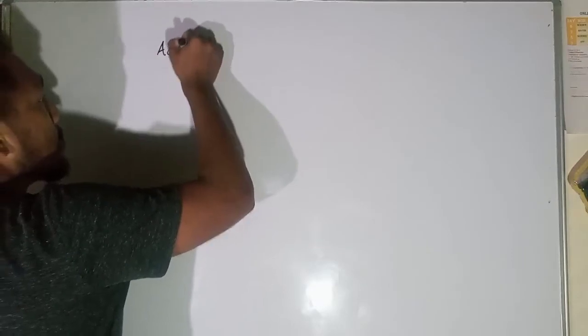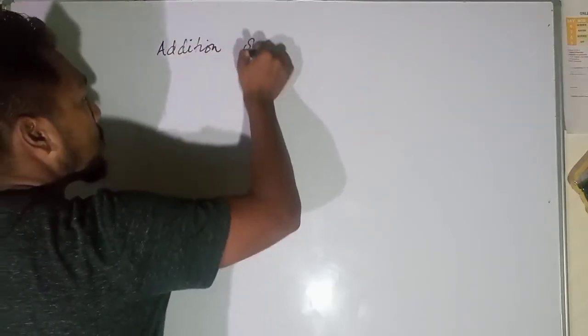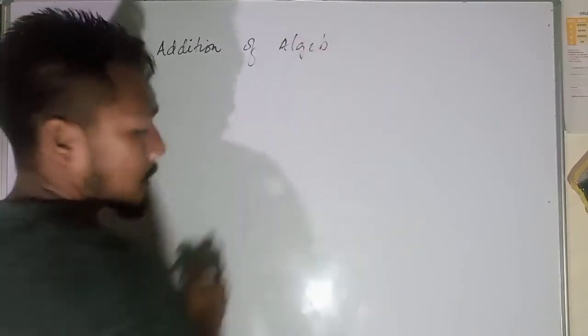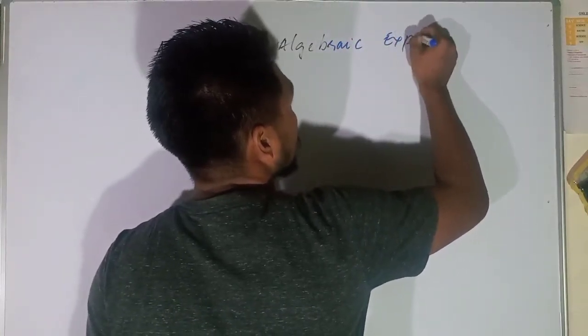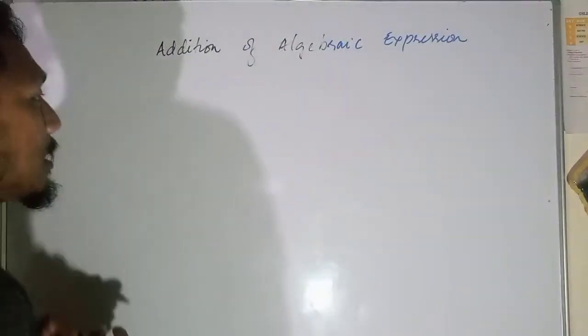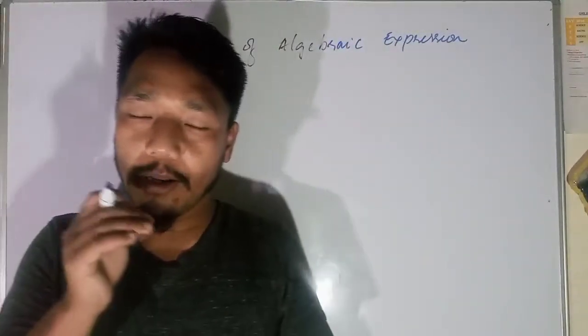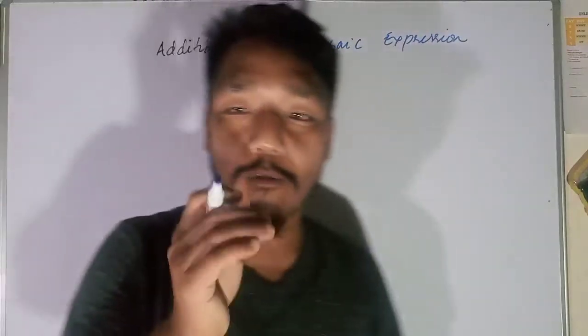We have to be very clear about mathematics, that is additions of algebraic expressions. So today we will discuss about the additions of algebraic expressions. In the previous videos I shared that only the like terms can go for addition and subtraction operations. If the terms are unlike terms, then we cannot go for additions or subtraction.